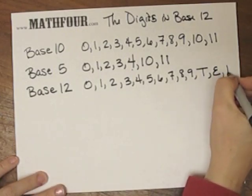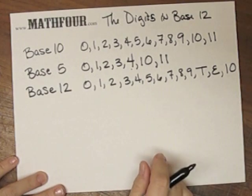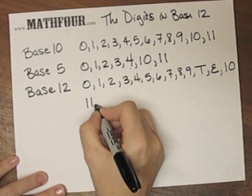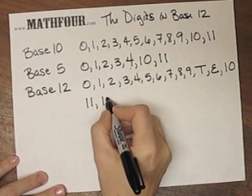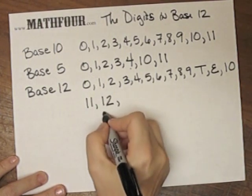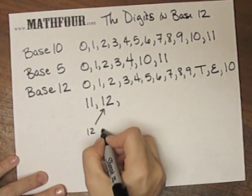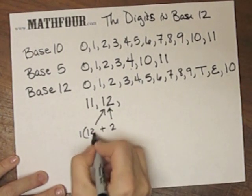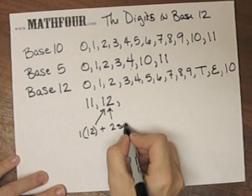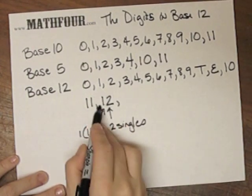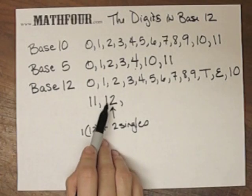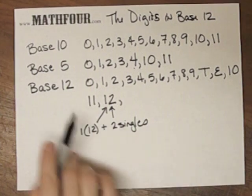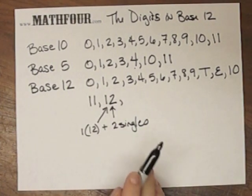What comes after E is 1 set of 12 and 0 singles. Continuing, this is 1 set of 12 and 1 single. 1 set of 12 and 2 singles. Now this number right here means 12 plus 2, 1 set of 12, so 1 times 12 plus 2 singles. So this number for us is 14. So don't read this as 12. This is called 1, 2 in a base 12 system. These two things are different. It's creepy, but that's the way it is.